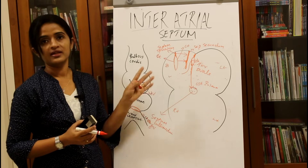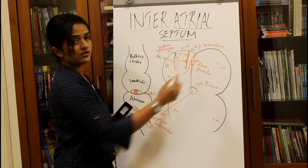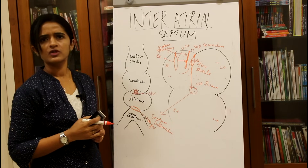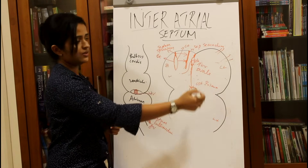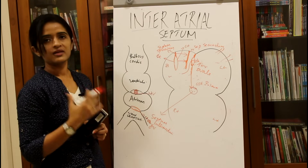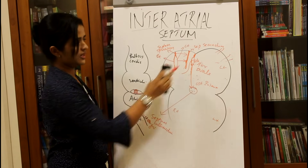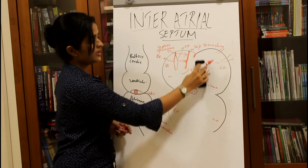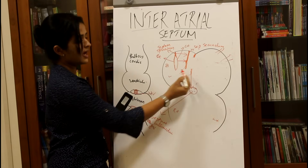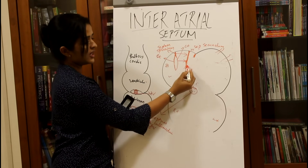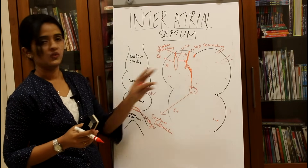After birth, pressure in the left atrium increases because the lungs start functioning and blood from the lungs through the pulmonary veins reaches the left atrium. As the pressure inside the left atrium increases, the septum primum — acting as a flap valve — fuses with the septum secundum, closing the foramen ovale.